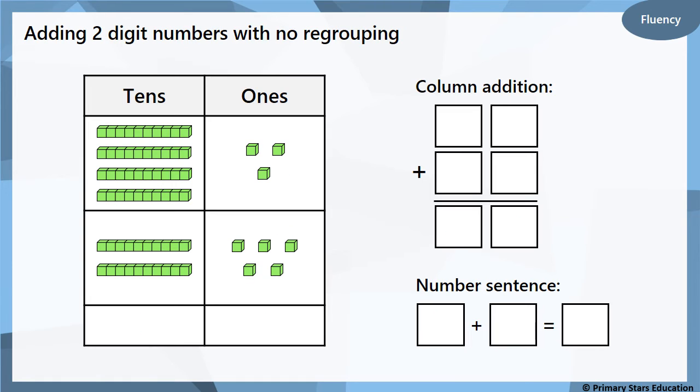The last one then with no regrouping. We've got four tens and three ones is 43. Two tens and five ones is 25. Three and five, if you count them all up, that's eight. Four and two, or 40 and 20, is 60. So my answer is 68. 43 add 25 equals 68.